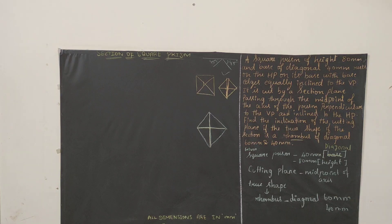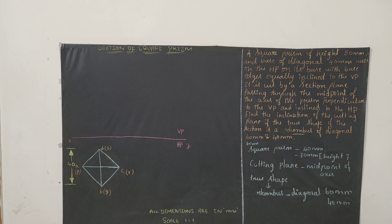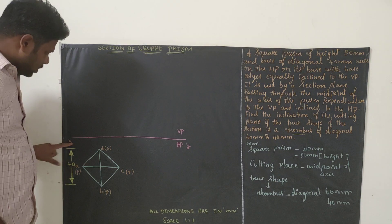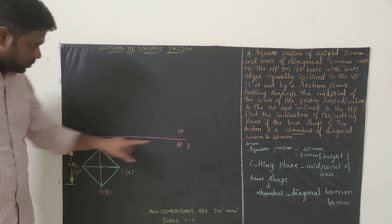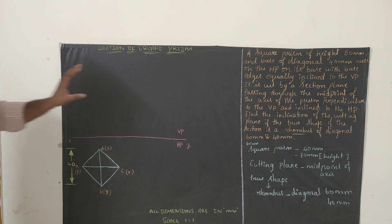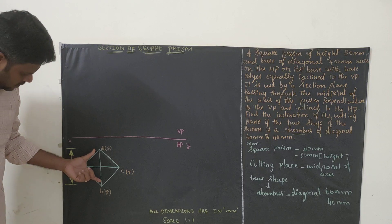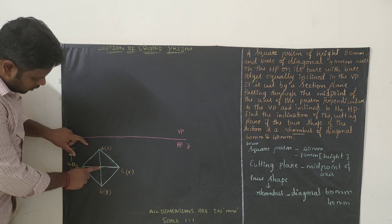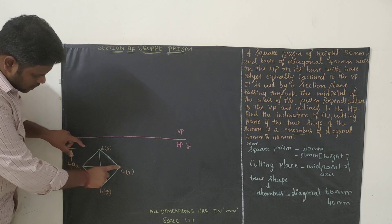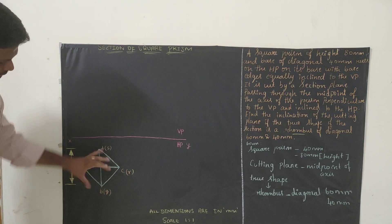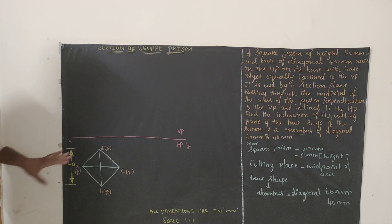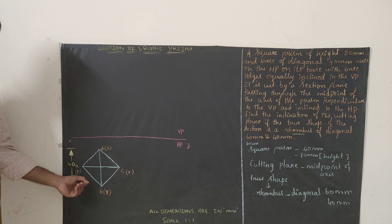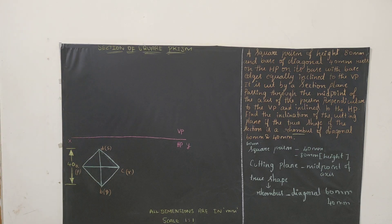Now I will explain how to draw the base diagram. Draw the reference line and mark X, Y, VP, HP. The diagonal is 40 mm, so draw a line for 40 mm, bisect the line so you get 20 mm on both sides, then join all the corners. This is the top view. Then we will extend all the top view points upward so that we can get the front view of the square prism.